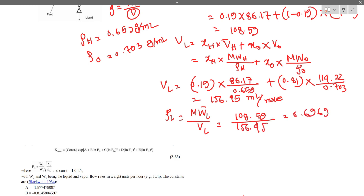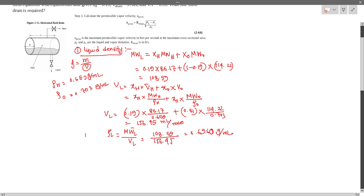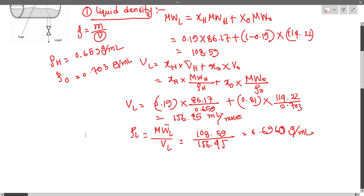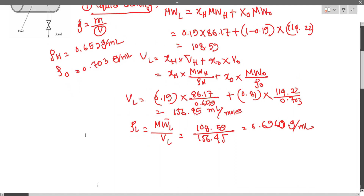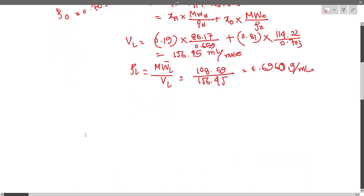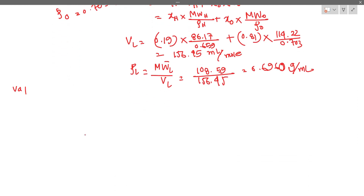The result is approximately 0.6960 grams per milliliter for the liquid density. Now we also need to find the vapor density, which we will calculate using a different approach.